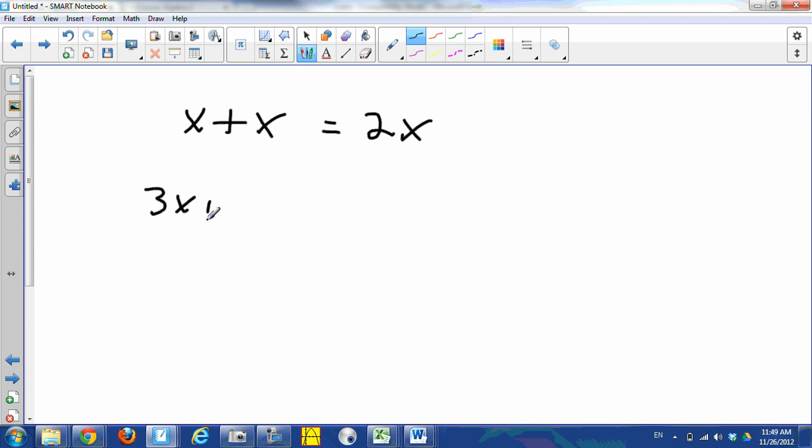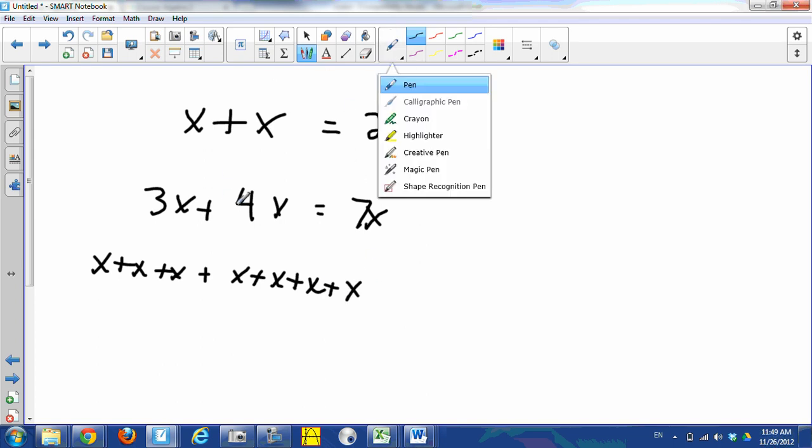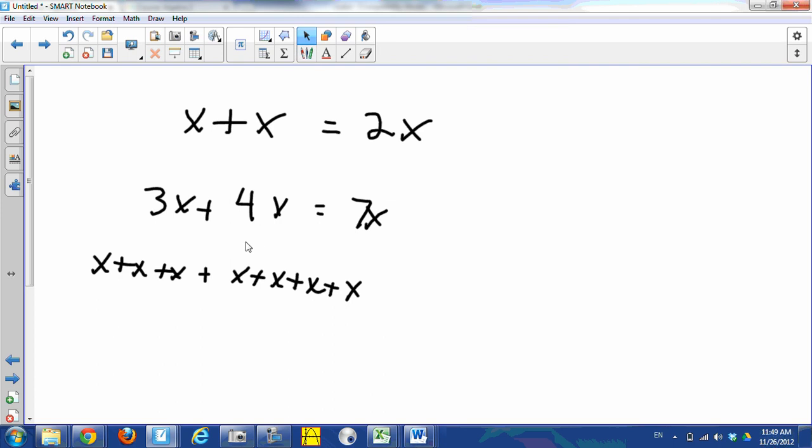We could say that 3x + 4x equals 7x. Why? Because this 3x here, the 3x is x + x + x, and the 4x is x + x + x + x. I should have a little color coordination going on there, but 3x right here, there's 3x and there's 4x.